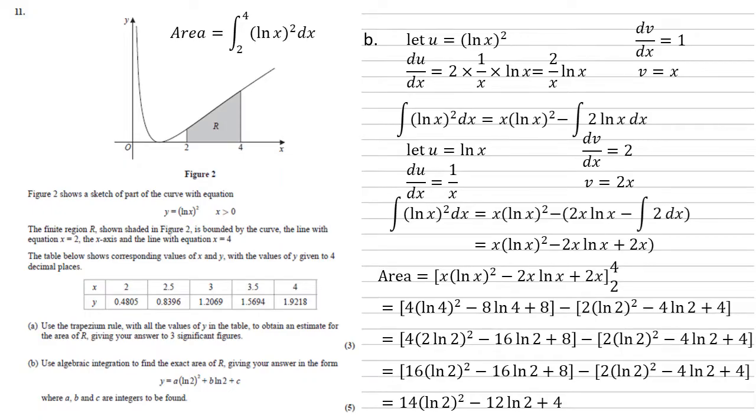Finally, let's bring our like terms together, so we get an answer of 14 ln 2 squared minus 12 ln 2 plus 4.